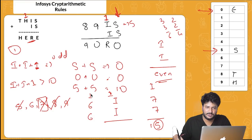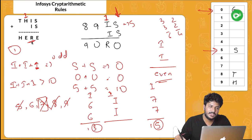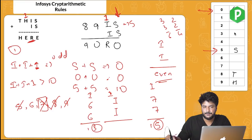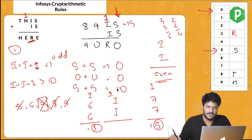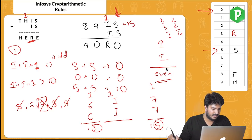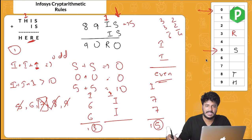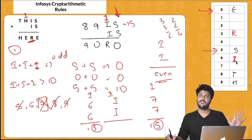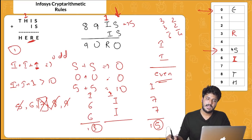Testing I=7: 7+7+1 = 15, so R=5. But 5 is taken by S — conflict. Testing I=6: 6+6+1 = 13, so R=3, which is unoccupied. Therefore I=6 and R=3. All values are now found and the problem is solved.